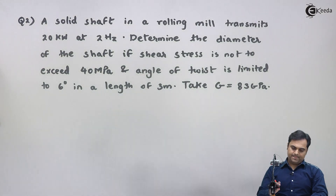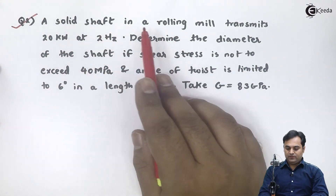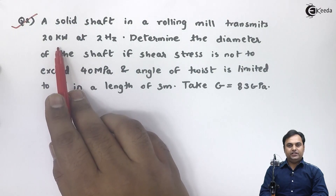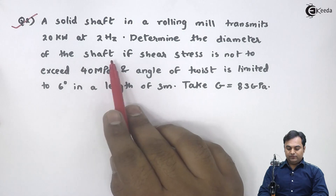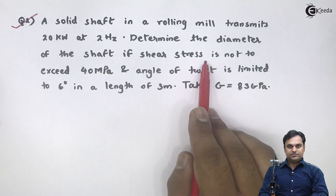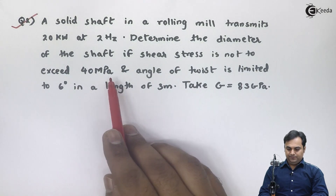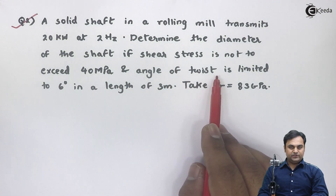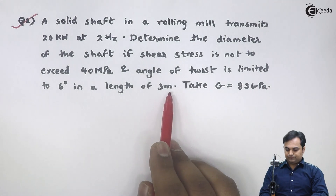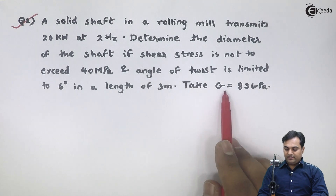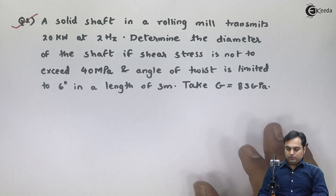Let us take the second question. A solid shaft in a rolling mill transmits 20 kilowatts at 2 Hertz. Determine the diameter of the shaft if shear stress is not to exceed 40 megapascal and angle of twist is limited to 6 degrees in a length of 3 meters. Take G equal to 83 GPa, that is modulus of rigidity.